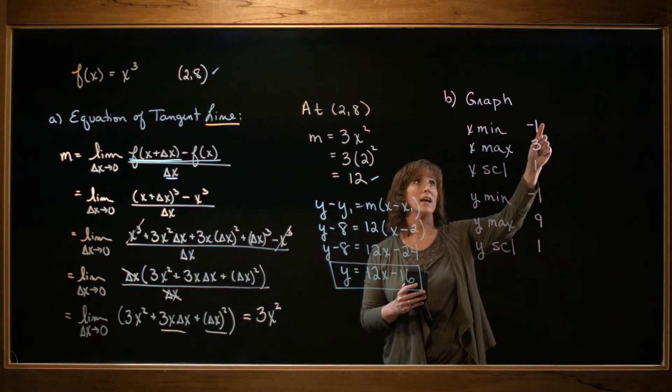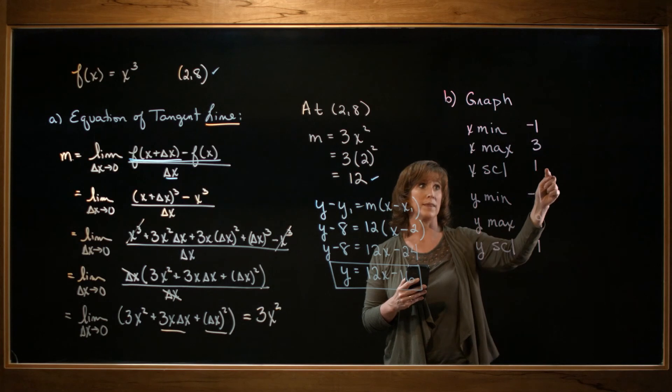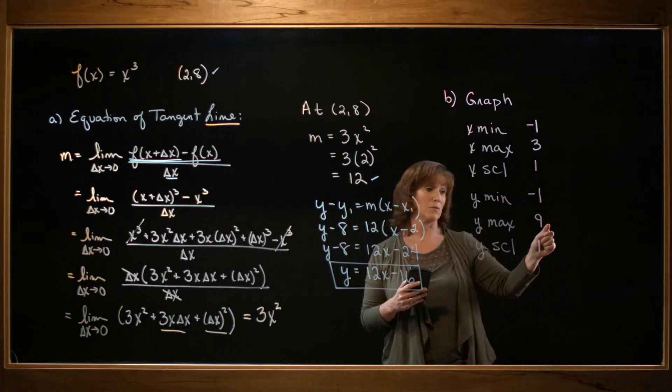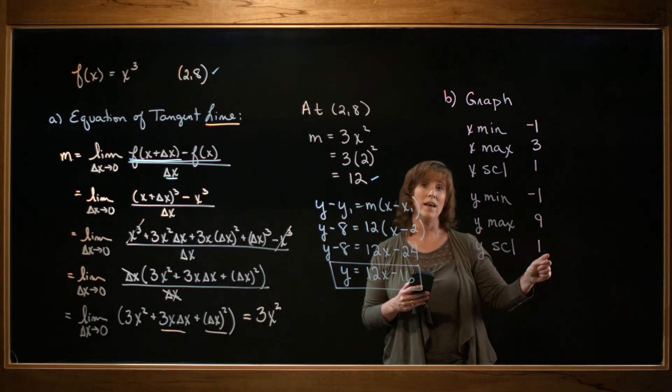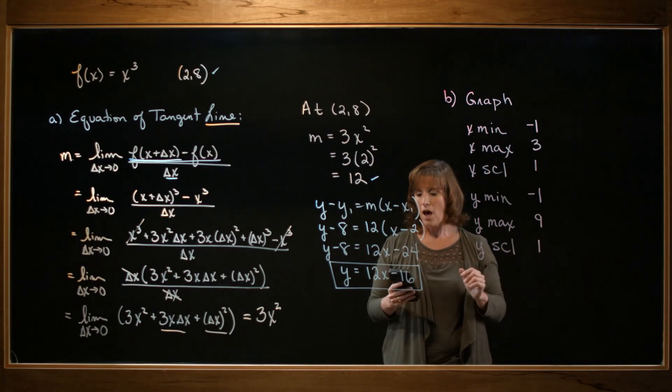I neglected to mention that you have a nice window if you use a minimum at negative 1, a maximum of 3, with an x scale of 1. A y minimum of negative 1, a y maximum of 9, with a y scale of 1. You don't have to use this window, but this will give you a nice picture.